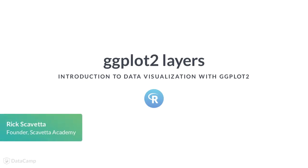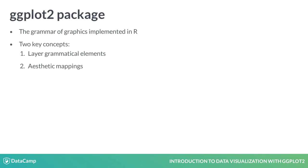Now that we have some idea about the different grammatical elements of graphics, let's see how this works in practice. The grammar of graphics is implemented in R using the ggplot2 package. There are two key functions that ggplot2 serves. First, we construct plots by layering grammatical elements on top of each other. Second, we use aesthetic mappings to bridge the link between data and its visual interpretation.